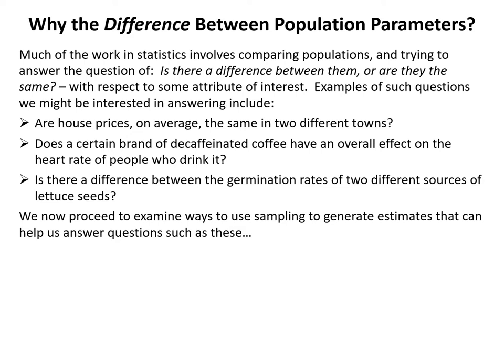Much of the work in statistics involves comparing populations and trying to answer the question: is there a difference between them, or are they the same with respect to some attribute of interest? Examples of such questions include: are house prices on average the same in two different towns? Does a certain brand of decaffeinated coffee have an overall effect on the heart rate of people who drink it? Is there a difference between the germination rates of two different sources of lettuce seeds? We now proceed to examine ways to use sampling to generate estimates that can help us answer questions such as these.